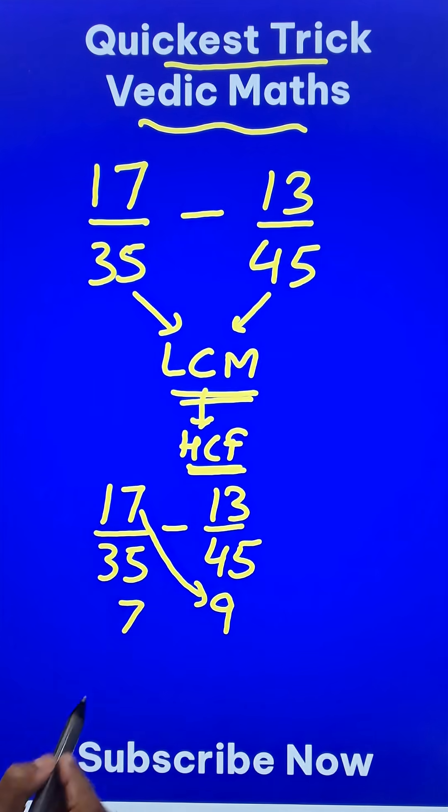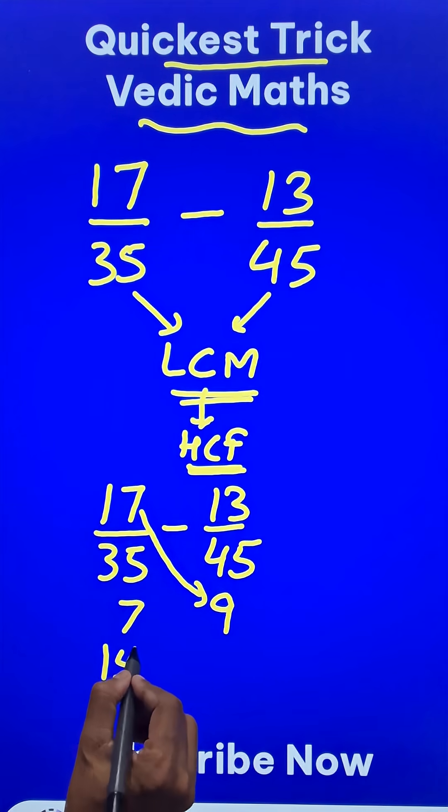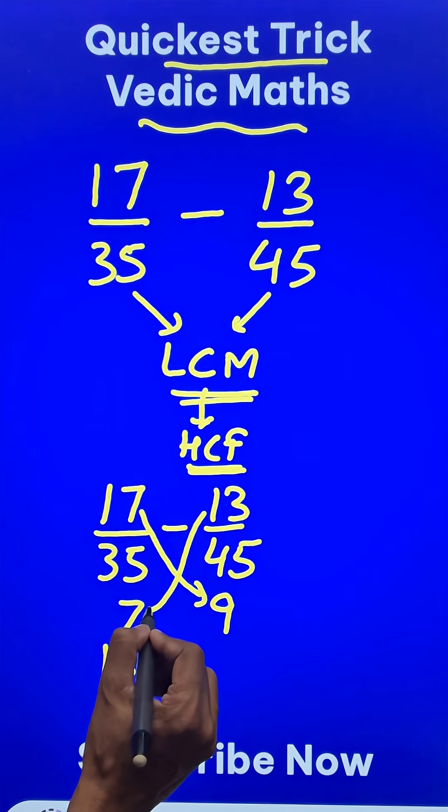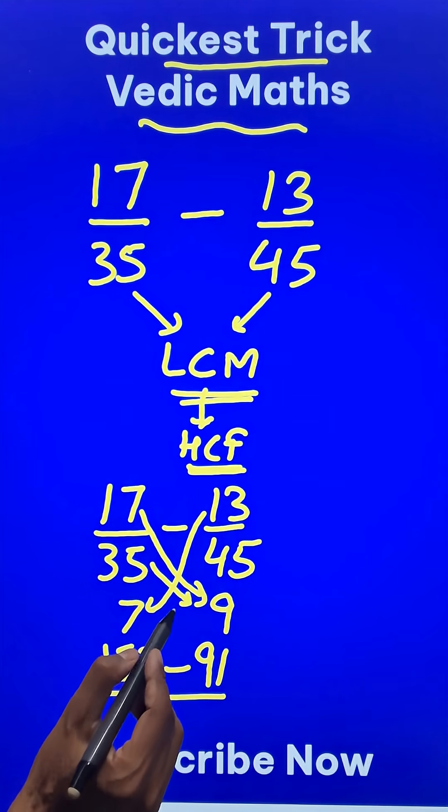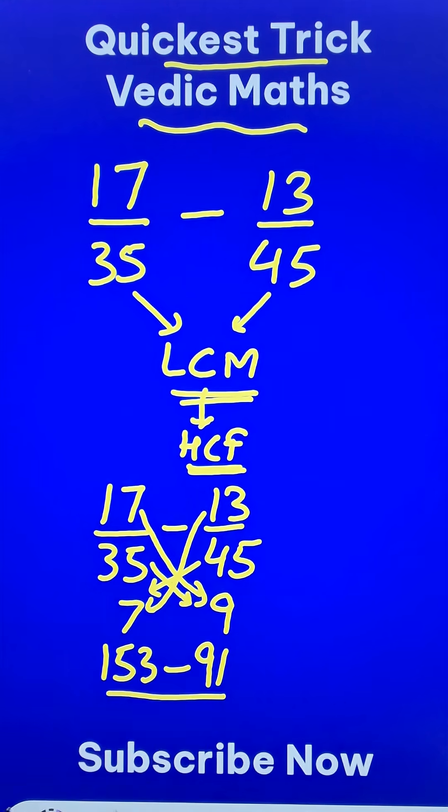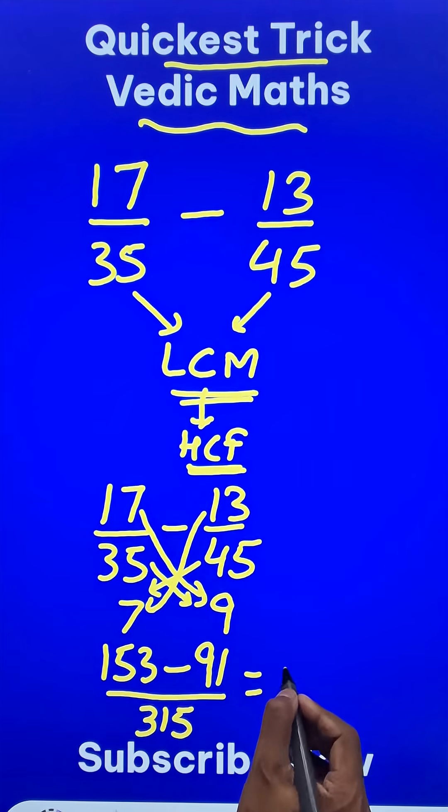So I will multiply 17 times 9 which gives me 153 minus 13 times 7 which is 91, and in the denominator either multiply 35 times 9 or multiply 45 times 7, you will get 315. And so the answer for the question is 62 over 315.